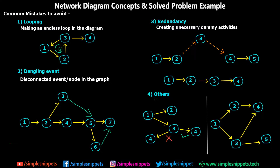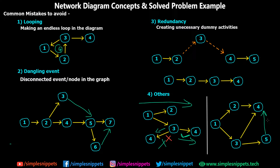Lastly, there are some miscellaneous mistakes. When drawing a network diagram you should go from left to right — you should not go backwards. Also, you should try to have a closed graph; if you have a dangling event after an activity, you should connect it. This is not compulsory and you won't lose marks, but typically it should be connected. Now let's move on to a numerical based on network diagrams.